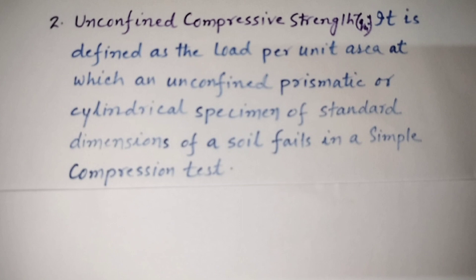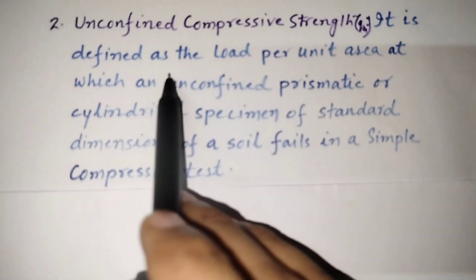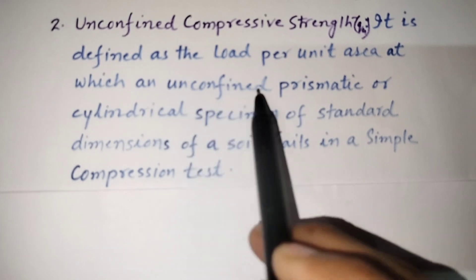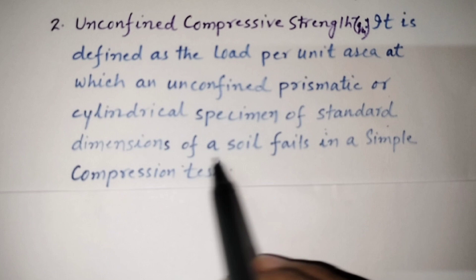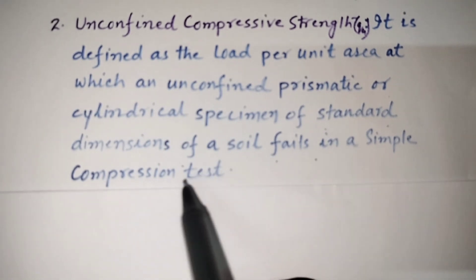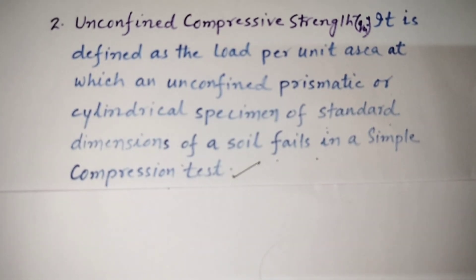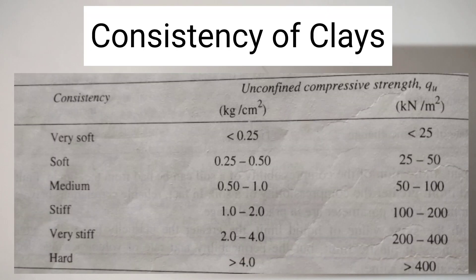Now, the unconfined compressive strength. The unconfined compressive strength of a cohesive soil is related to the consistency of clay. It is defined as the load per unit area at which an unconfined prismatic or cylindrical specimen of standard dimension of soil fails in a simple compression test. This table gives the unconfined compressive strength of natural deposit of cohesive soil in terms of their consistency.